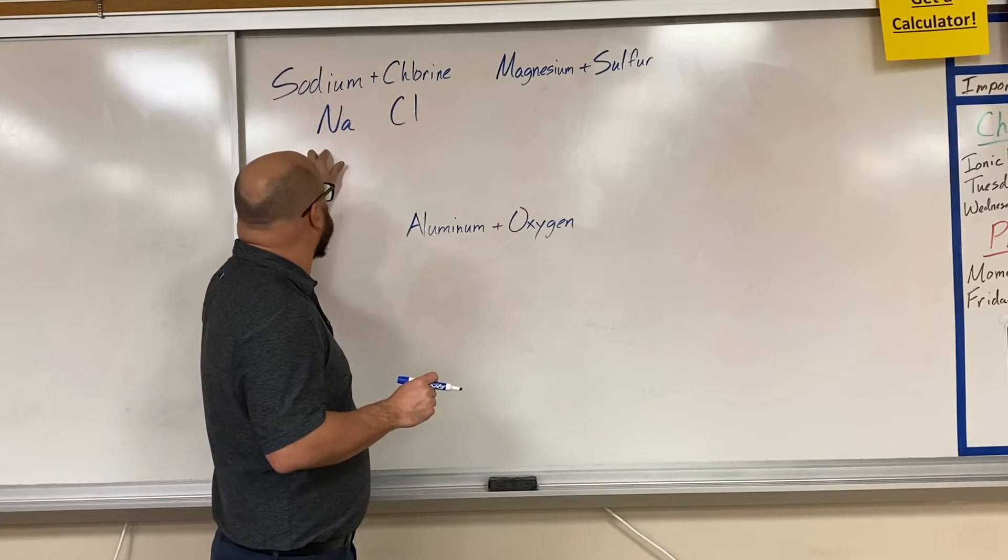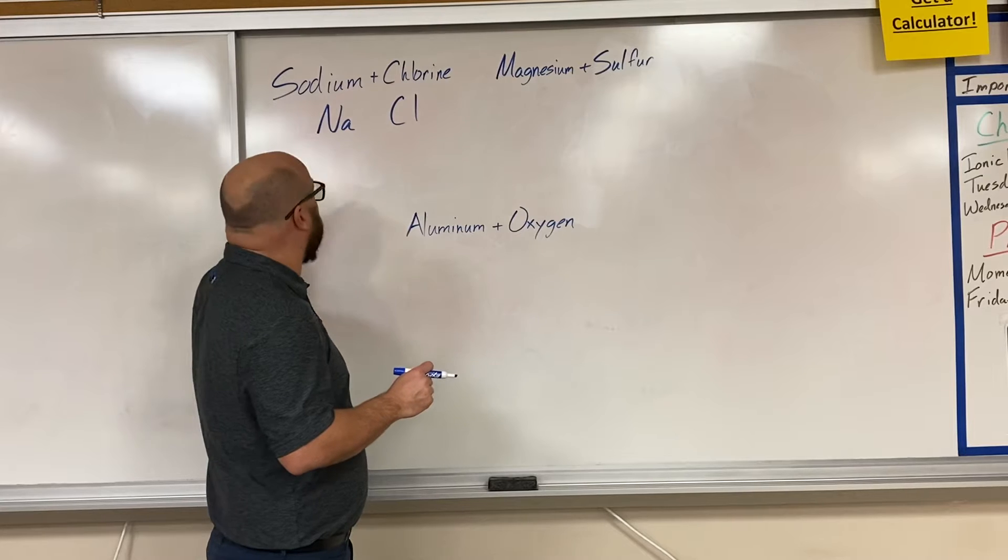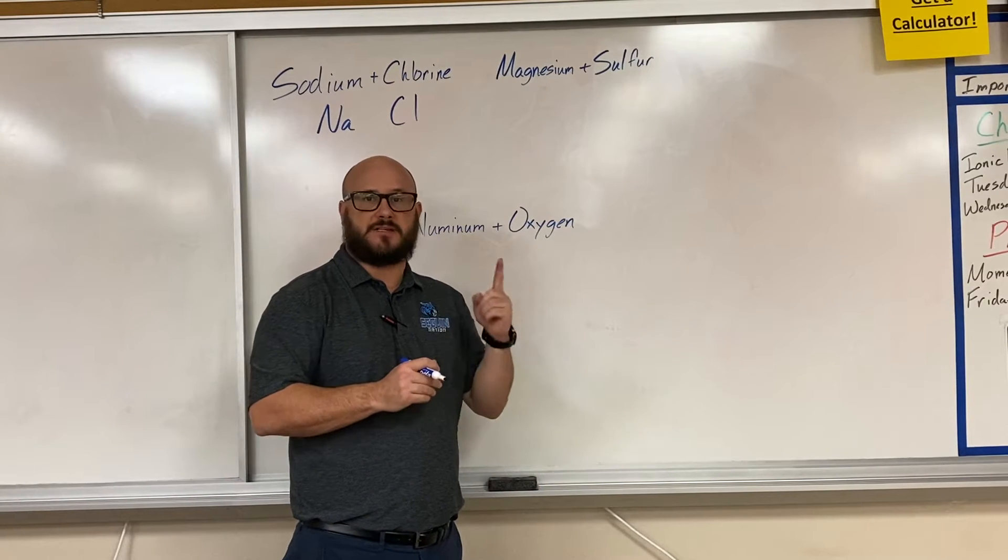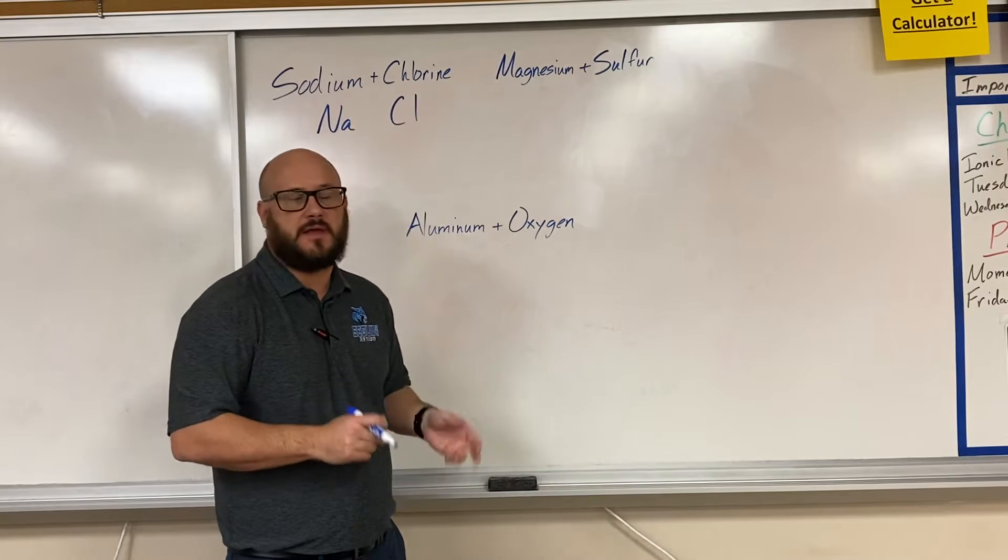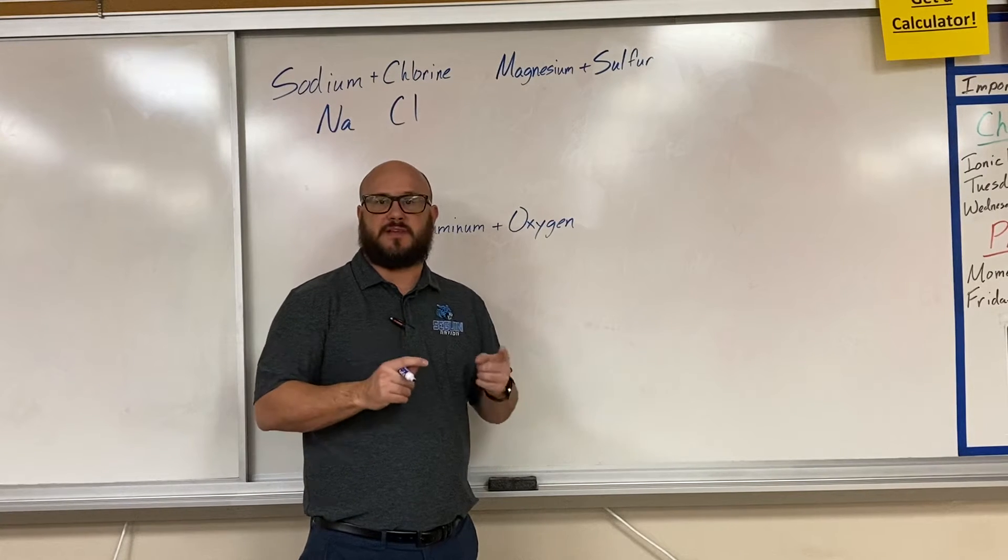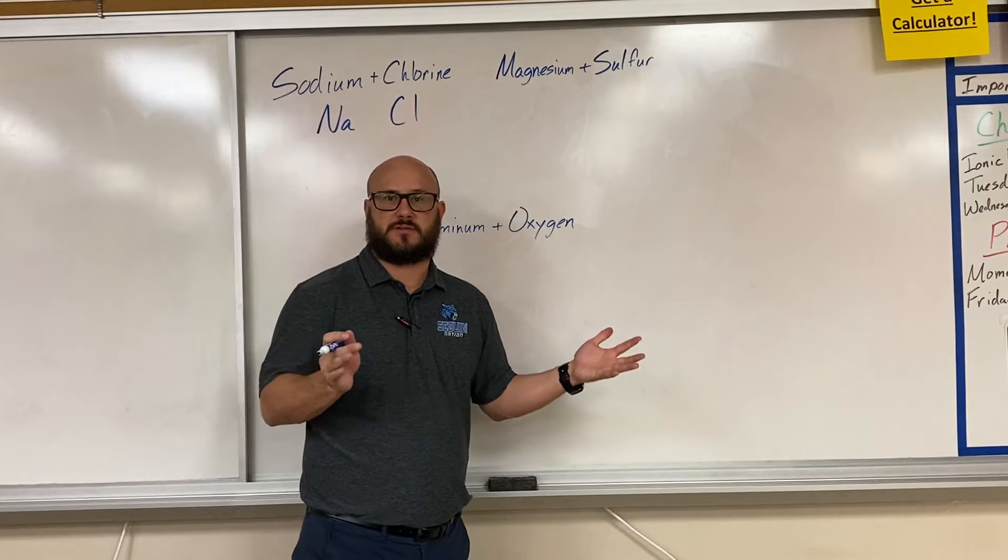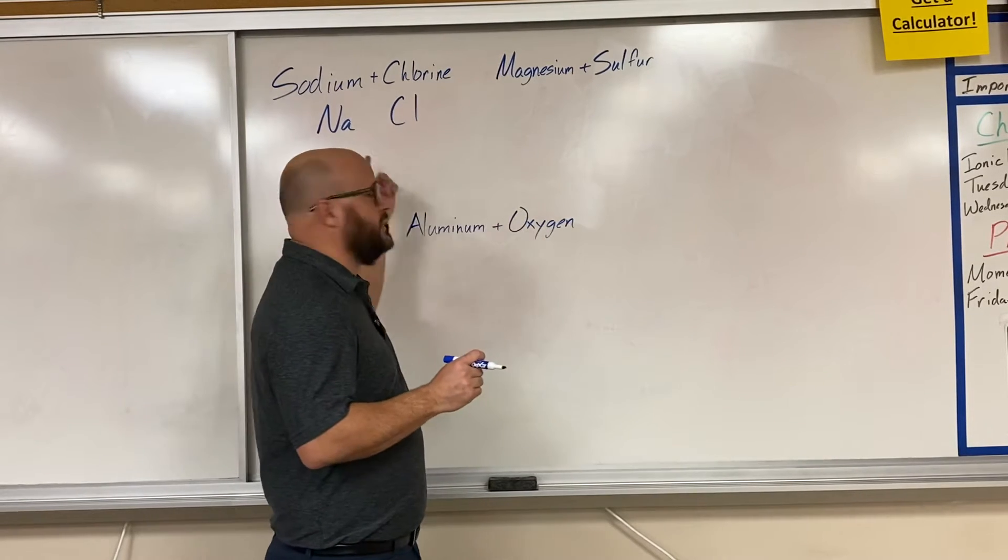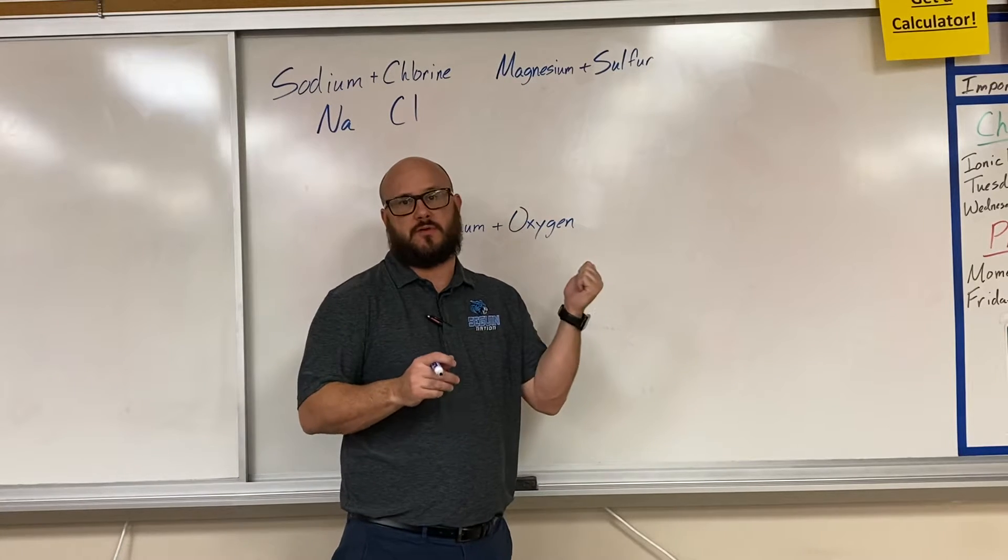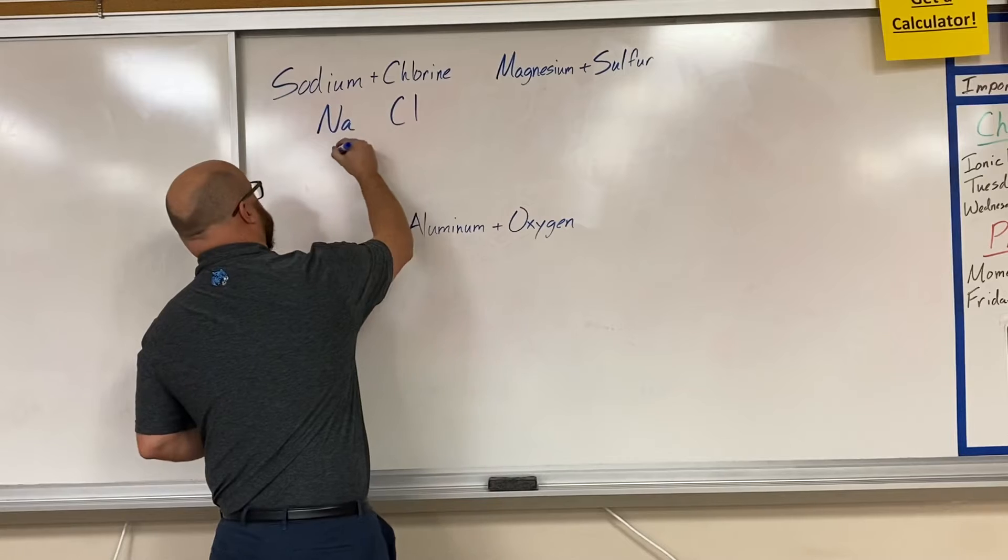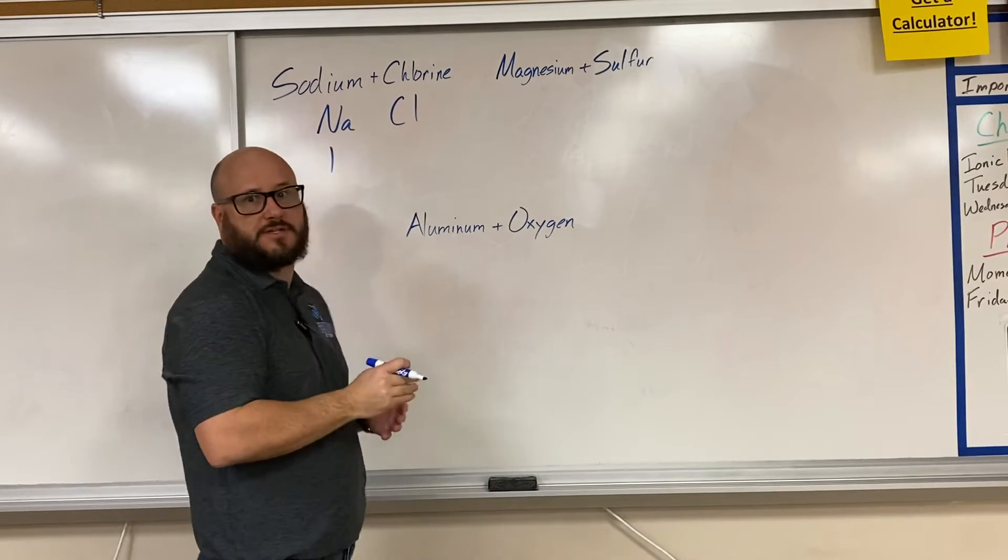Find sodium, way over in group 1A. Now 1A means it has 1 valence electron. To bond, these elements have to get to either 0 or 8 valence electrons. If you have 1 valence electron, it's going to be a lot easier to lose that 1 than it is to gain 7. So our oxidation number is 1 for sodium.